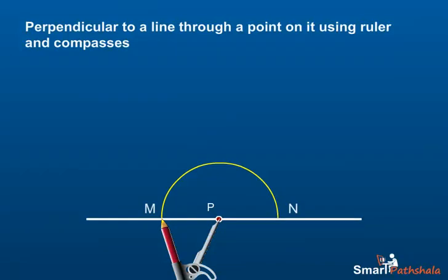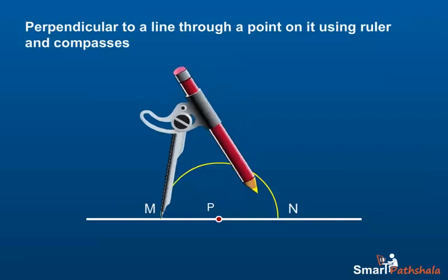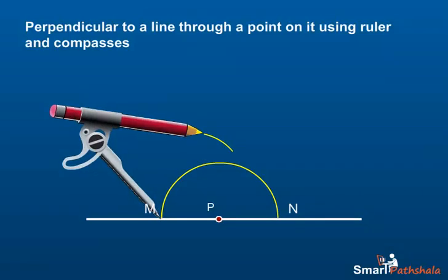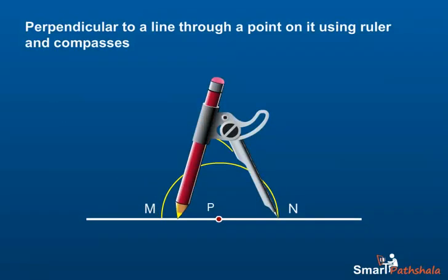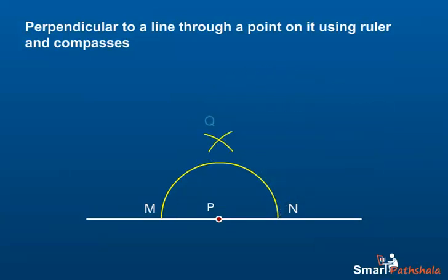Step 3: With M as center and a radius more than MP, construct an arc. Similarly, with N as center and a radius more than NP, construct an arc that cuts the previous arc at Q.